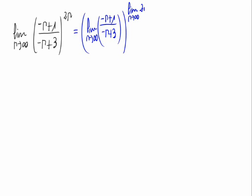Let's calculate the limit of the quotient of the polynomial. We have that the result would be infinity divided by infinity, so that's an indeterminate form. To solve it, we divide the numerator and the denominator by n of the highest exponent. In the numerator and denominator, we have n raised to 1, so we divide by n.